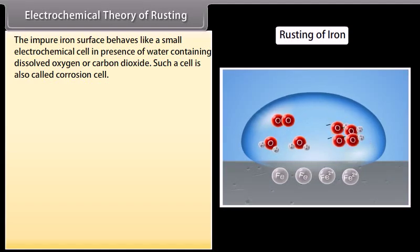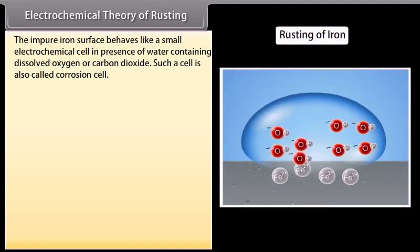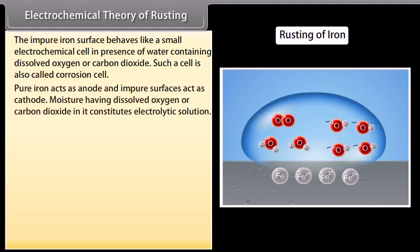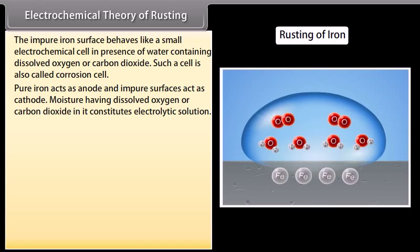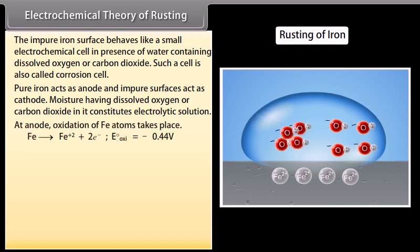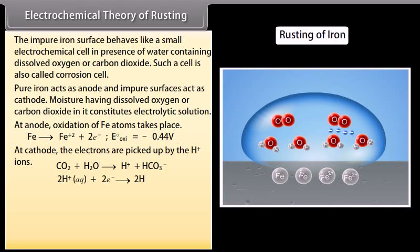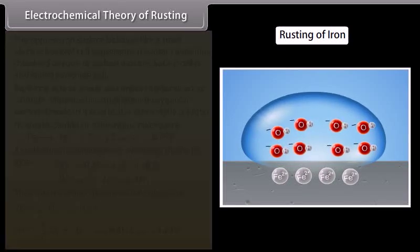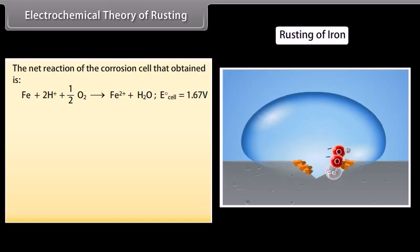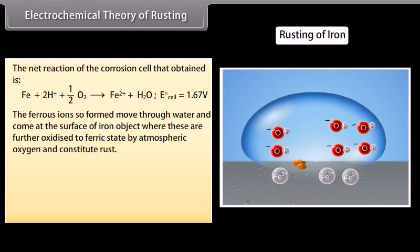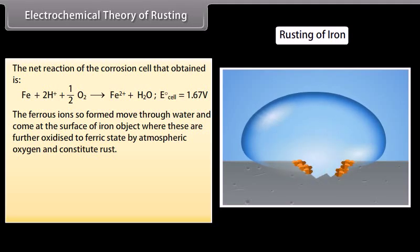Electrochemical theory of rusting. According to this theory, the impure iron surface behaves like a small electrochemical cell in presence of water containing dissolved oxygen or carbon dioxide. Such a cell is also called corrosion cell. Pure iron acts as anode and impure surfaces act as cathode. Moisture having dissolved oxygen or carbon dioxide in it constitutes electrolytic solution. At anode, oxidation of iron atoms takes place. At cathode, the electrons are picked up by H⁺ ions. The hydrogen atoms reduce the dissolved oxygen. The ferrous ions so formed move through water and come at the surface of iron object, where these are further oxidized to ferric state by atmospheric oxygen and constitute rust.